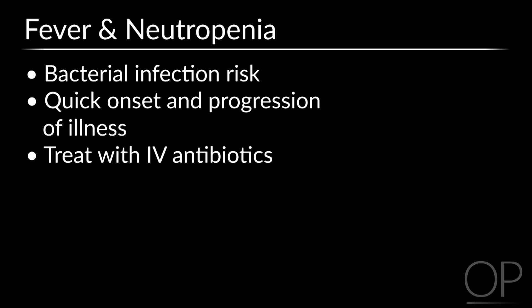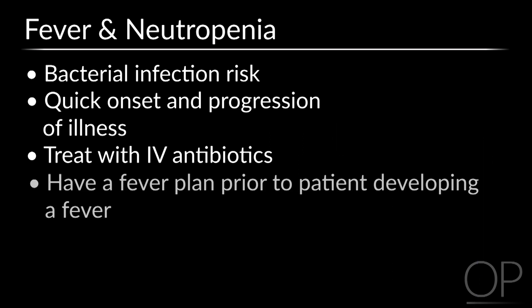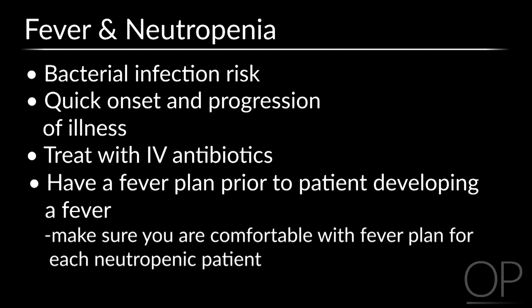Probably the most important thing to safely manage these patients is to have a plan in place before a patient develops a fever. Make sure that you are comfortable with a fever plan for each neutropenic patient that you're caring for. If you are unsure of what you should do if one of your patients were to spike a fever, be sure to proactively speak with your fellow or attending. The last thing you want to do is have to figure out in the heat of the moment when you find out that a patient has spiked a fever.